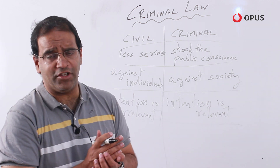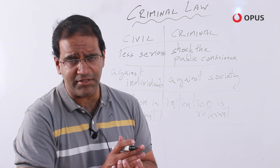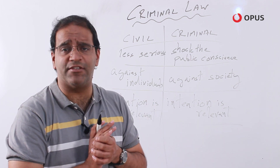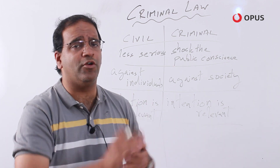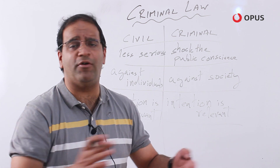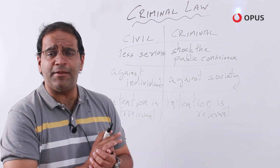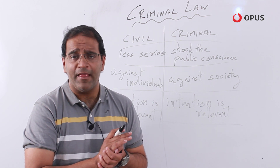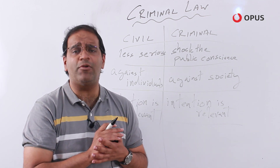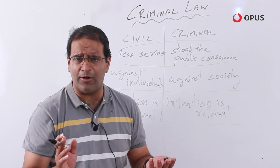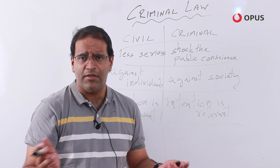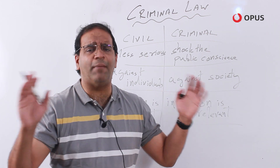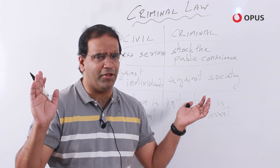A fourth distinguishing feature is the end result. What happens at the end of a civil dispute? The end result typically in a civil case, if the person is successful in court, is that the other party is asked to pay some compensation — more often than not, monetary compensation. You file a case against somebody with the whole objective of getting some sort of compensation, mostly monetary, though sometimes non-monetary as well.